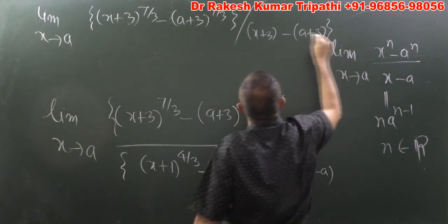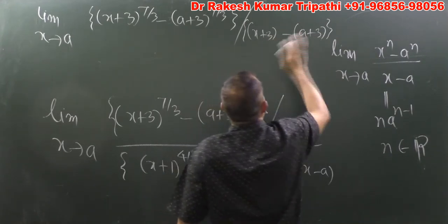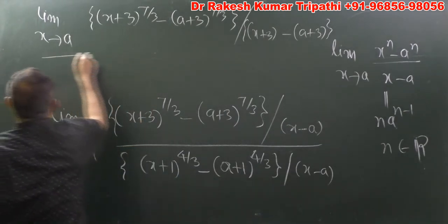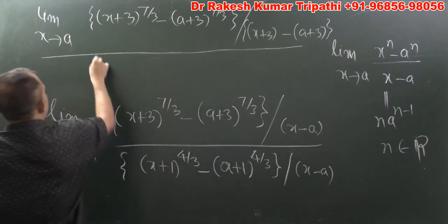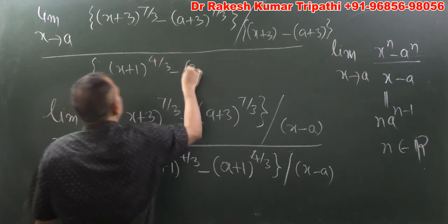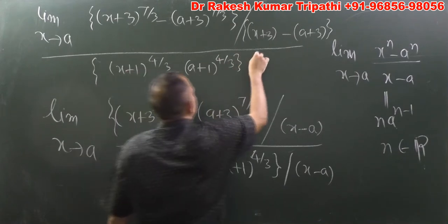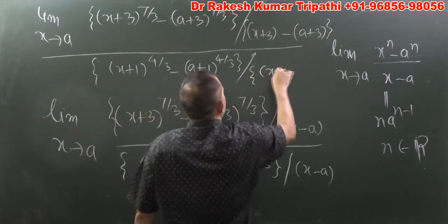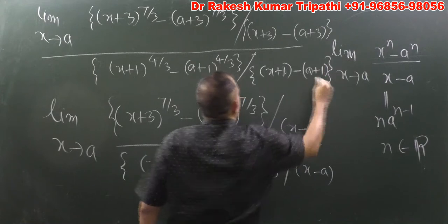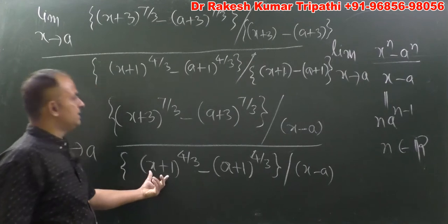You can see the +3 and -3 cancel each other in the denominator. In the denominator we can have (x+1)^(4/3) minus (a+1)^(4/3), all divided by (x+1) minus (a+1). We need this because in the denominator we have x+1 instead of x, and a+1 instead of a.